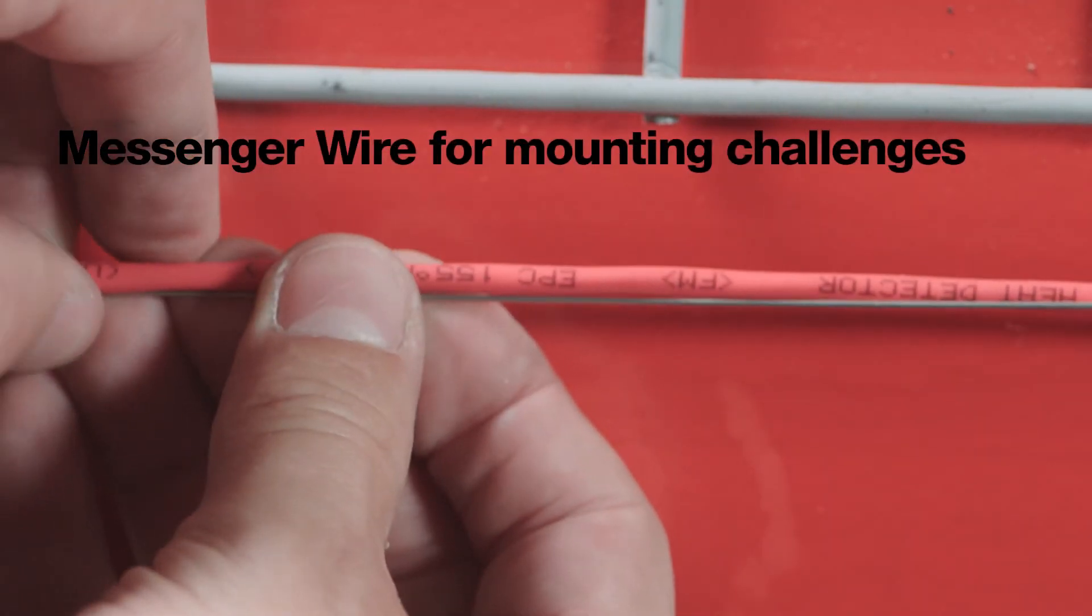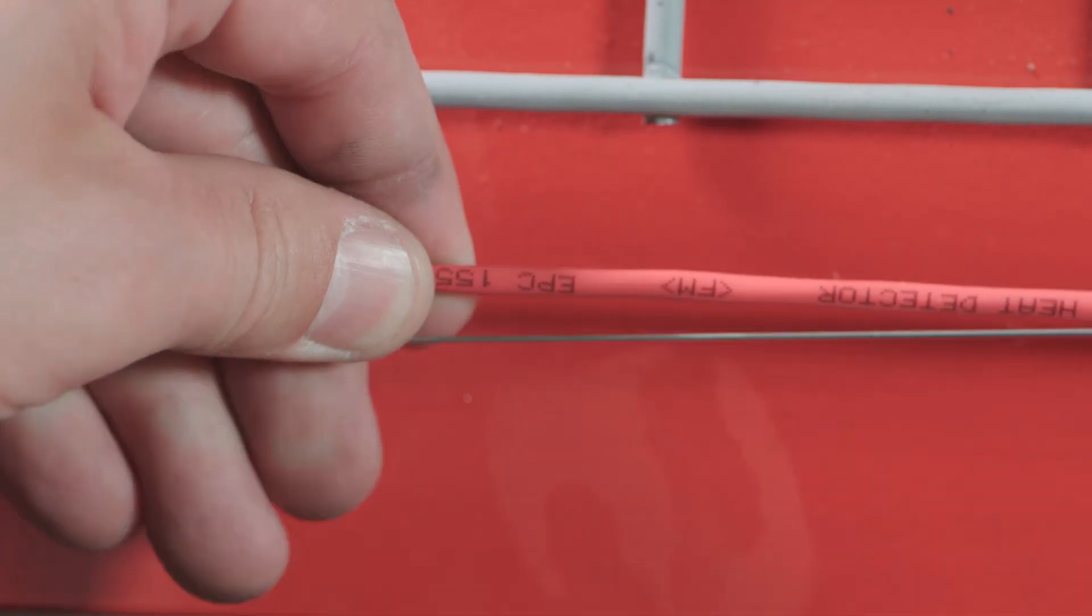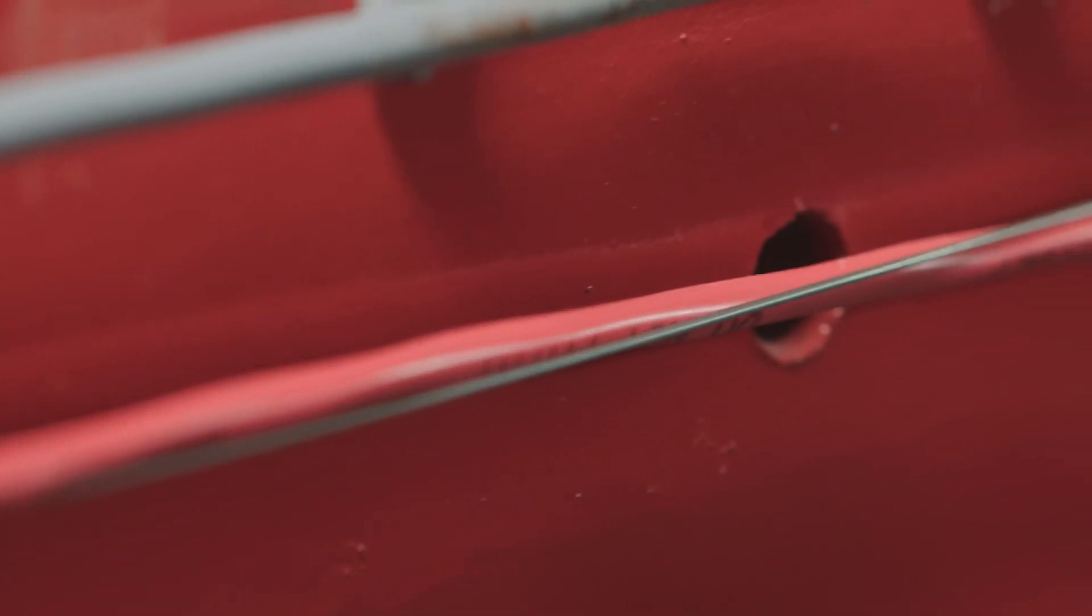Messenger wire is available with any model detector. It consists of high-strength stainless steel wire which is wrapped around the detector. This is typically used as a support wire designed to simplify the installation of the detector in areas where mounting is difficult.